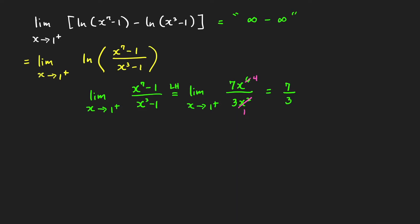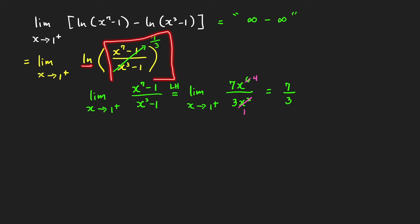Since the expression inside the ln is approaching 7/3 and the ln function is continuous at 7/3, the limit is just equal to ln(7/3).